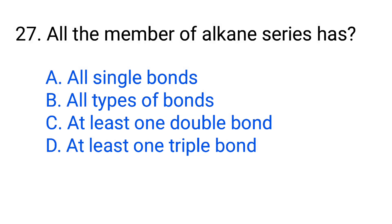Question number 27. All members of the alkane series have. Option A: All single bonds. B: All types of bonds. C: At least one double bond. D: At least one triple bond. The correct answer is option A, All single bonds.